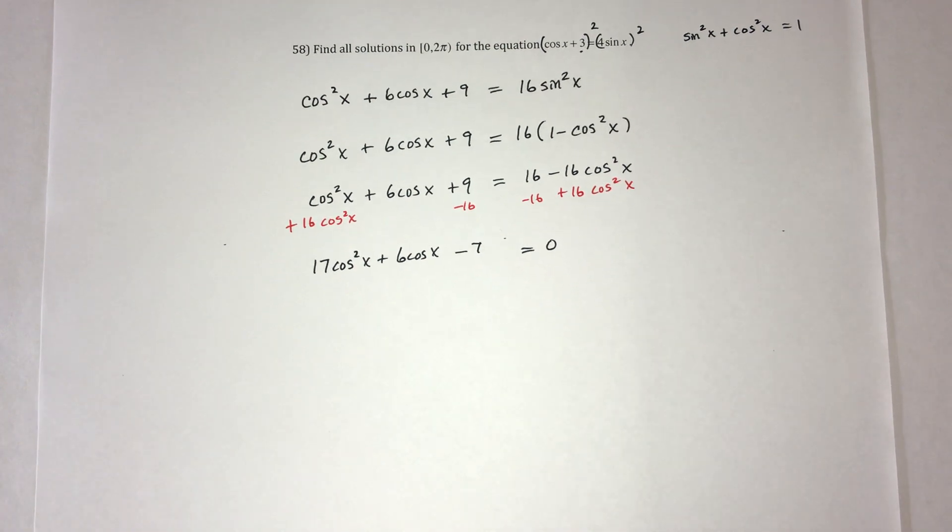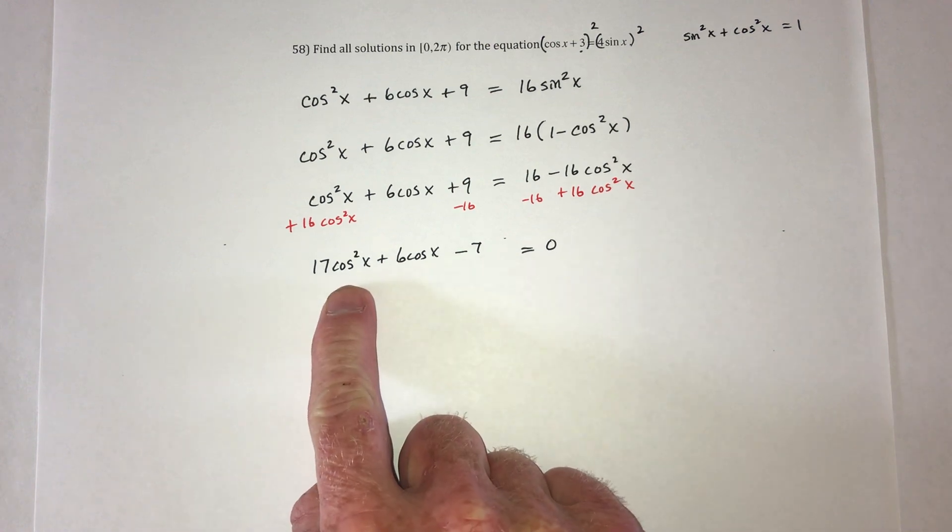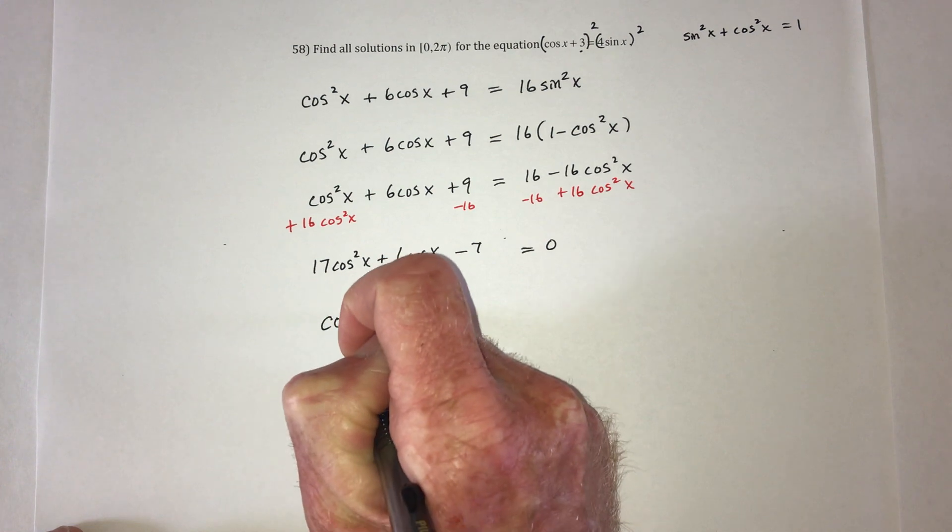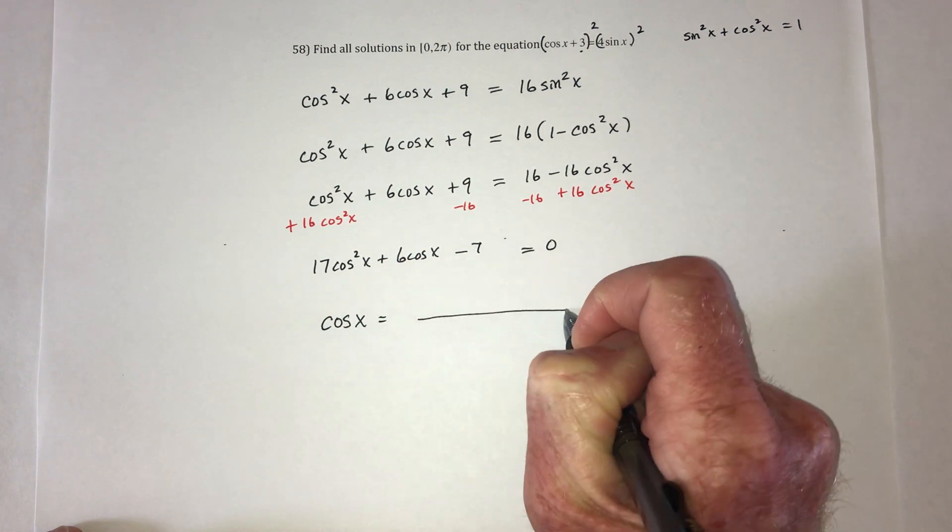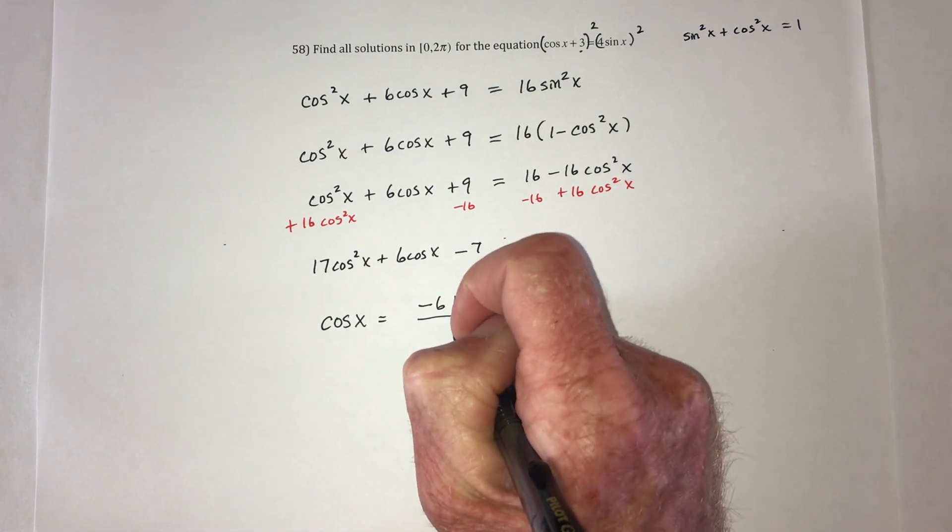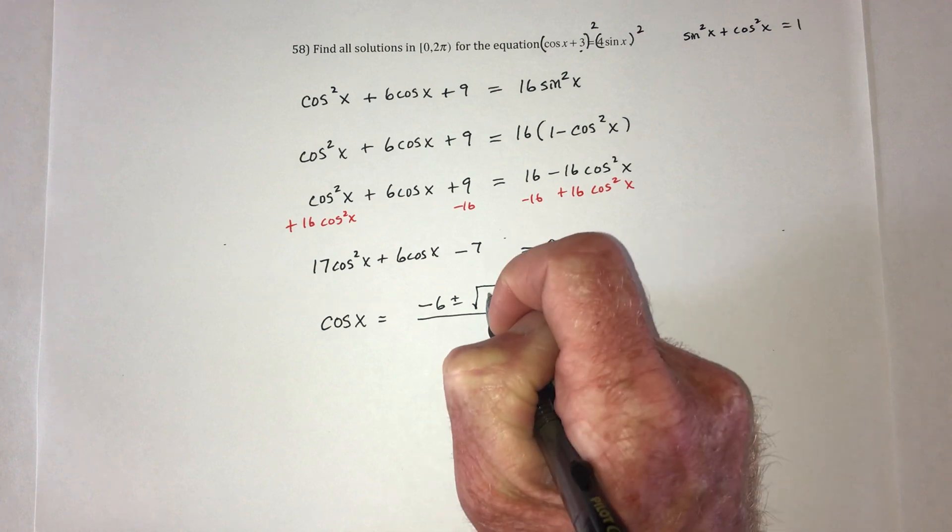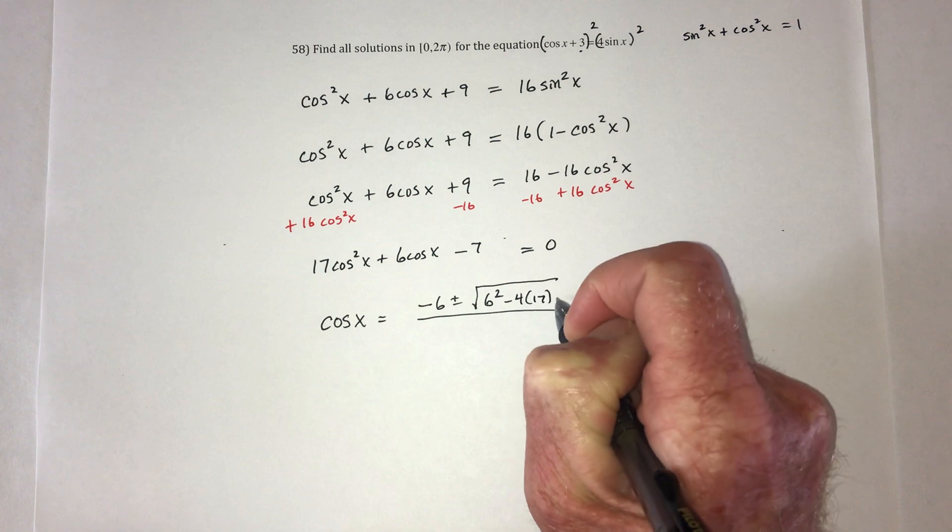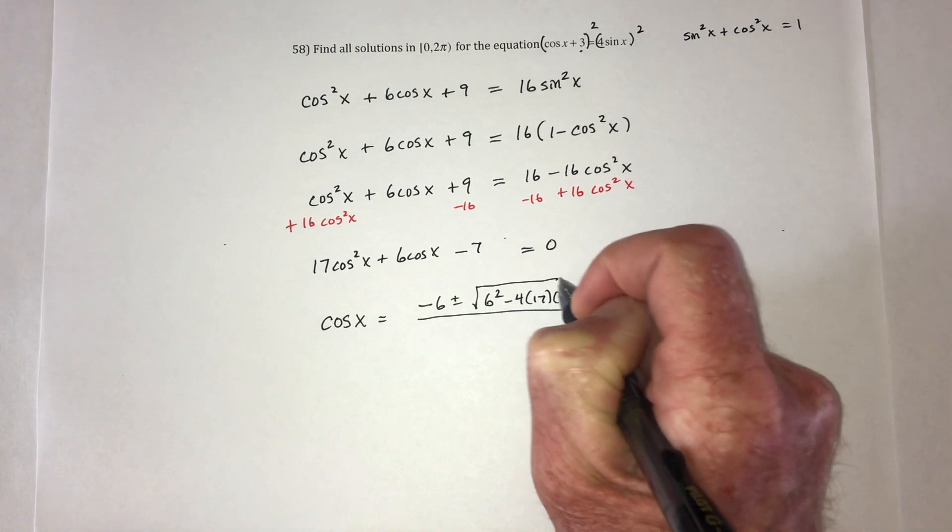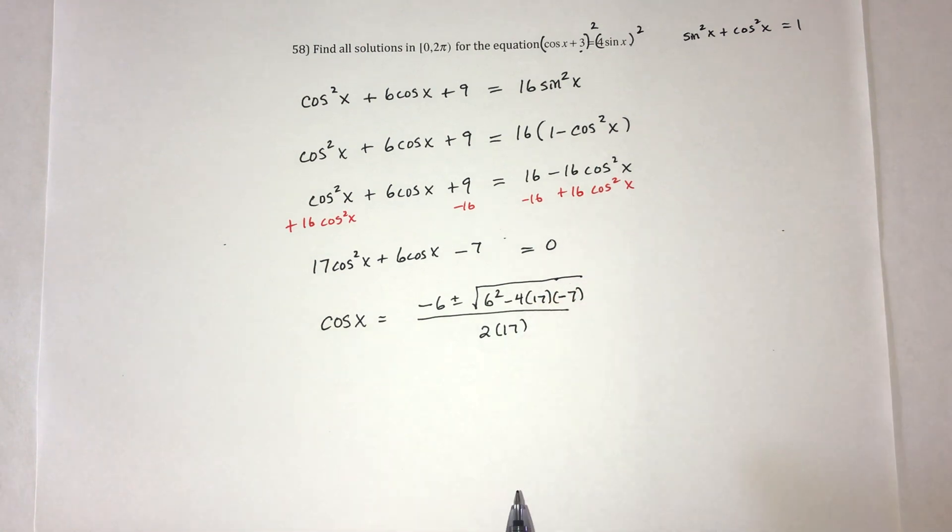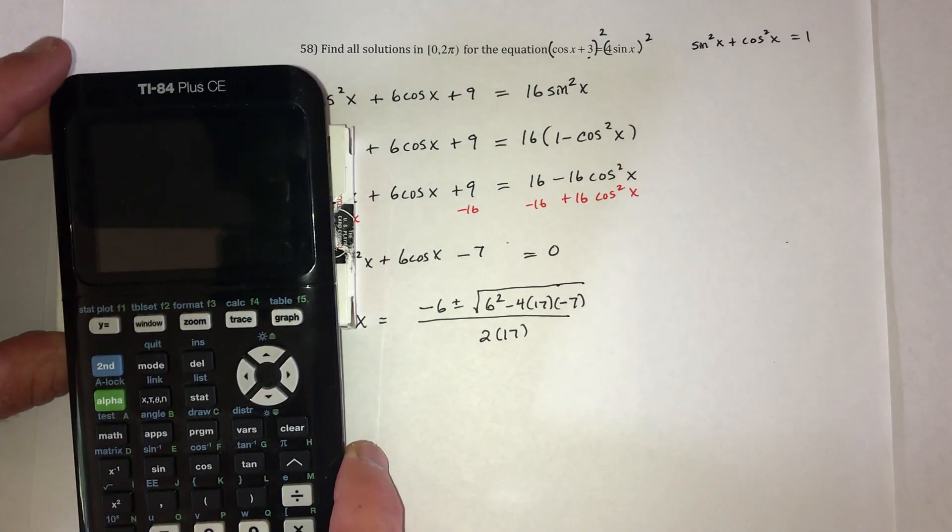So most likely, this does not factor. It's time to use the quadratic formula. So that would go cosine of x equals negative of the b plus or minus the square root b squared minus 4 times the a times the c. All divided by 2 times the a.